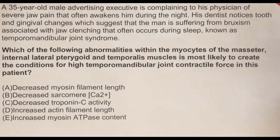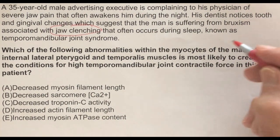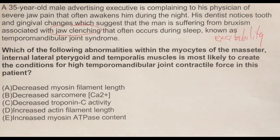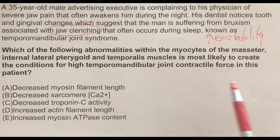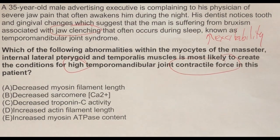The clinical vignette, also known as the stem, clearly relates to the lead-in question. It talks about jaw clenching and temporomandibular joint syndrome, which is a state of high excitability — sounds like a muscle spasm. Increased excitability of the nerve, the muscle, or both. We're looking for which of the following within the myocytes creates the conditions for high contractile force — they're asking us to explain the mechanism behind bruxism.